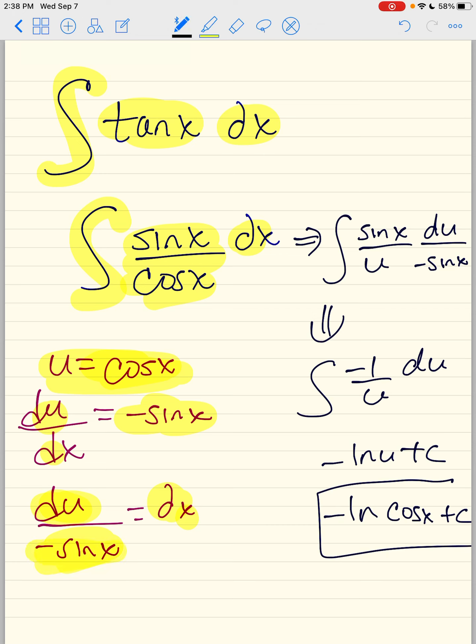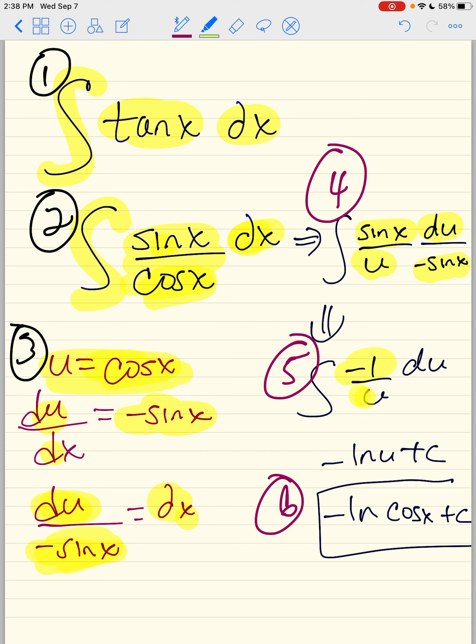Then what I'm going to do is, let me call this 1, 2, 3, and then I'm going to call this 4. So I'm turning this into u's now. Then 5, and then our final answer. So I turn this, I say sine is sine, cosine is u, dx is du over negative sine. And what you're going to do here is the sine x's will cancel. So negative 1 over u. And who gives me 1 over u? Natural log of u. So your final answer is going to be this.